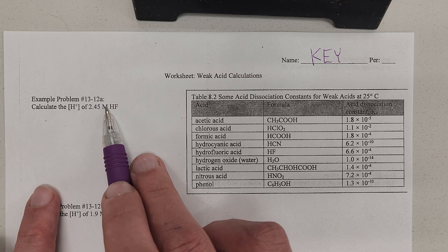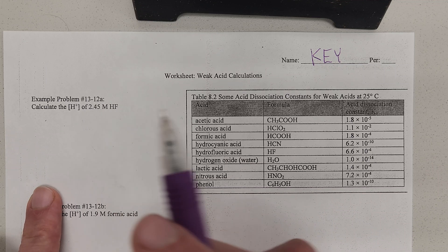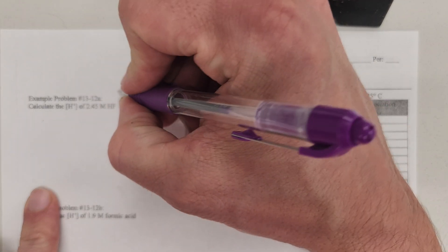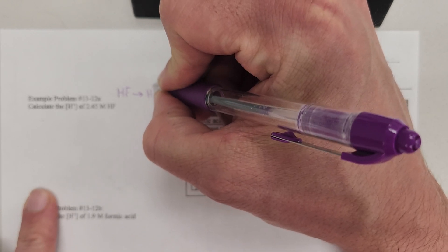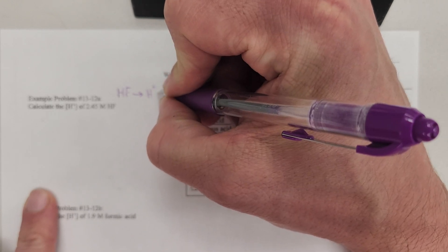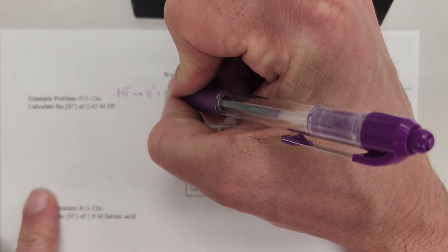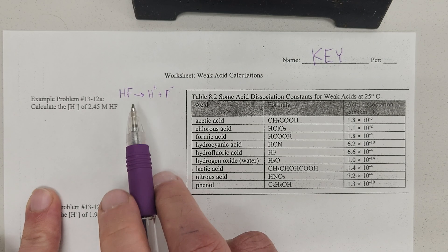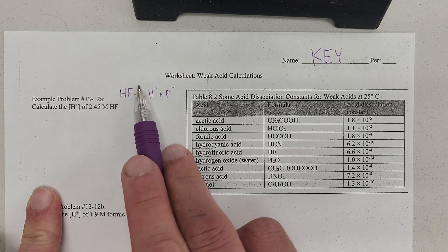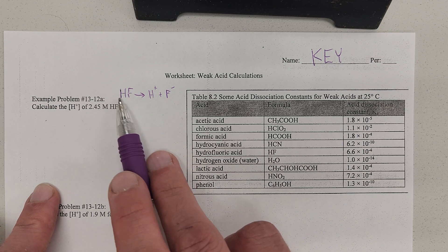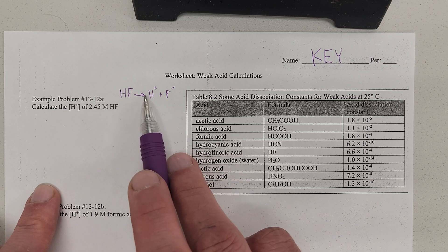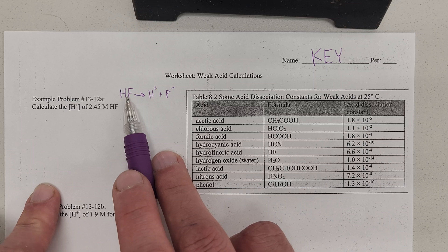Here's how it goes. When you want to do a calculation for weak acids, you need to understand that they do undergo the same kind of dissociation as a strong acid, but to a much lesser degree. Whereas in a strong acid, all of the acid becomes hydrogen and anion of some kind. In a weak acid, only a few of them dissociate — the majority do not.